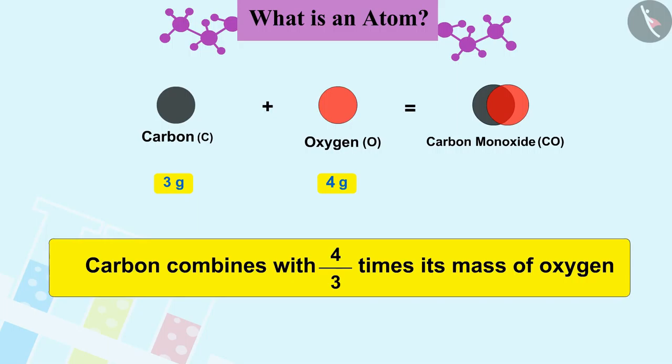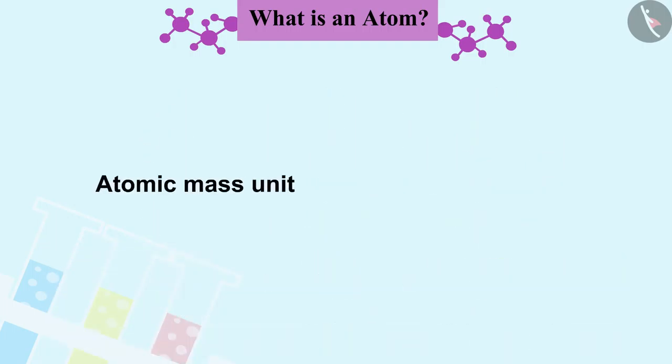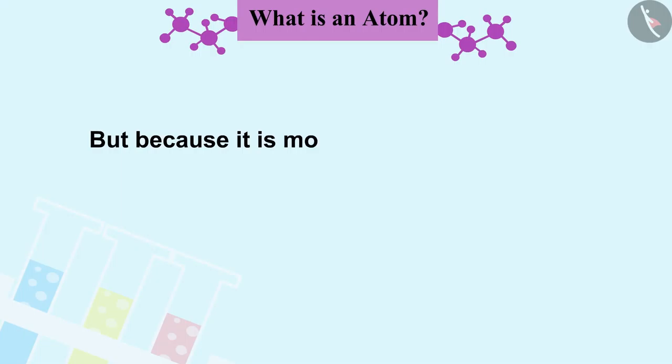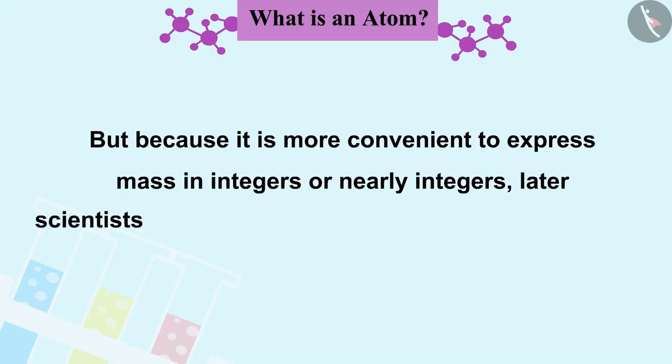Now, if we consider atomic mass unit to be equal to 1 carbon atomic mass, then we will assign carbon atomic mass to 1.0u and oxygen atomic mass to 1.33u, where u is the unified mass. But because it is more convenient to express mass in integers or nearly integers, later scientists researched different atomic mass units.